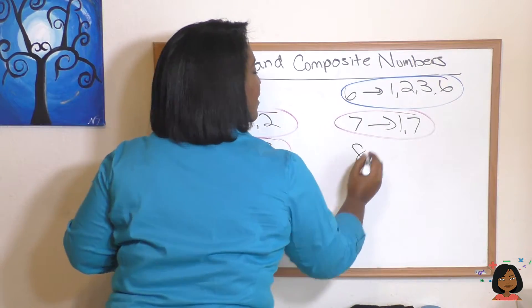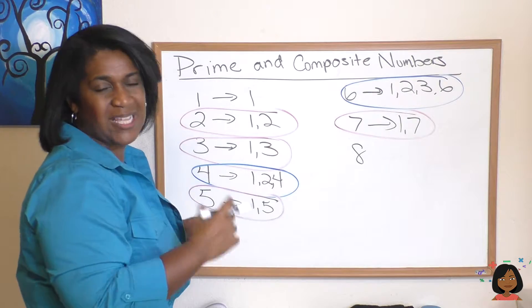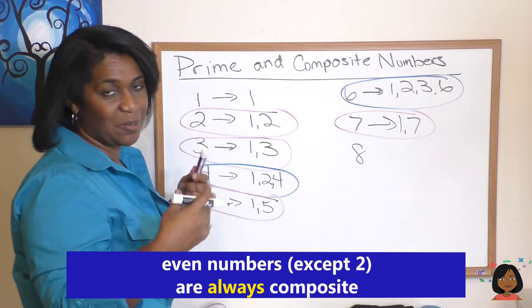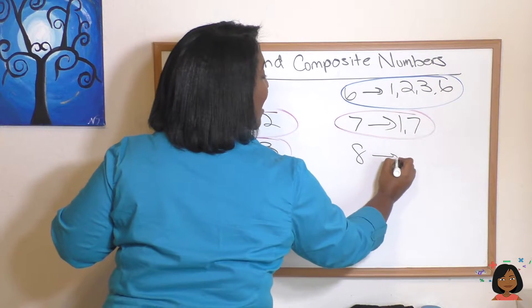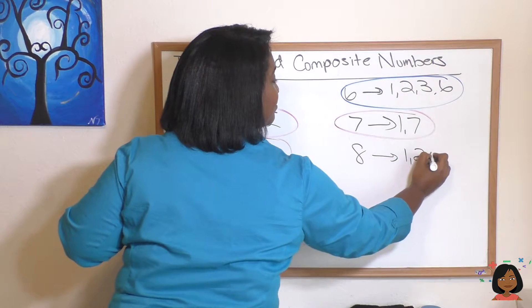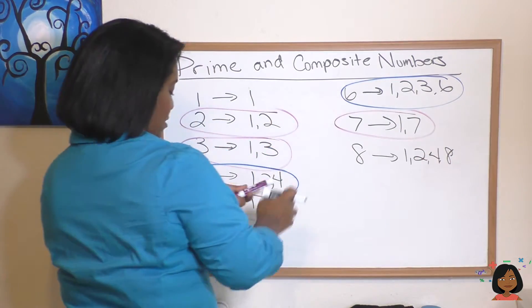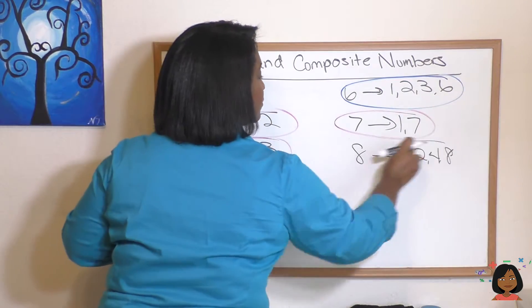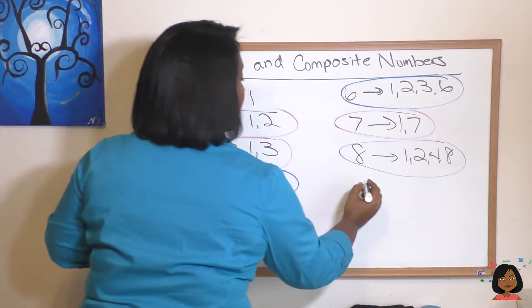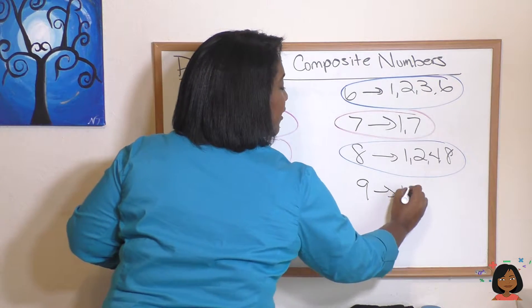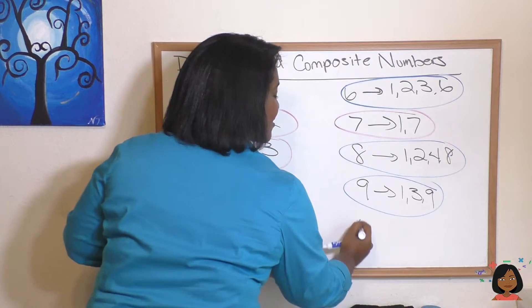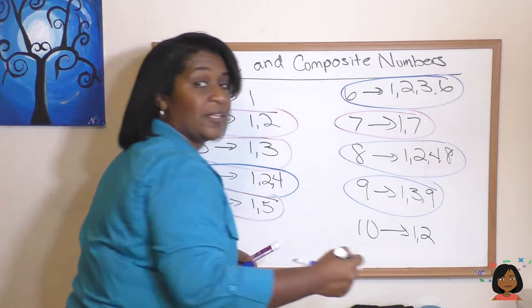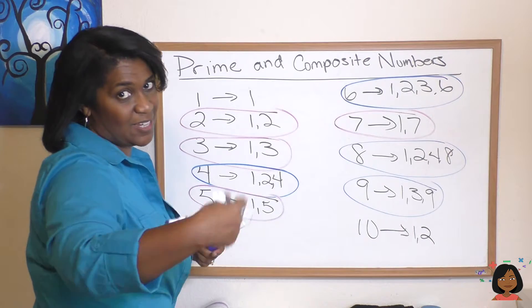What about eight? Now we notice something about even numbers. Even numbers are always going to be composite, except for two, because they always have a two as a factor. So there we go, that's another composite number. How about the number nine? Well we've got three in there as a factor, so we know that's got to be composite. And 10 has to be composite as well because as I said earlier, all even numbers past the number two are composite.